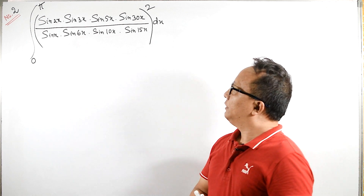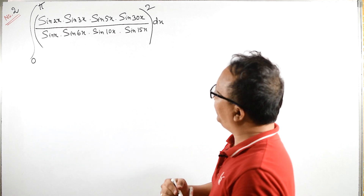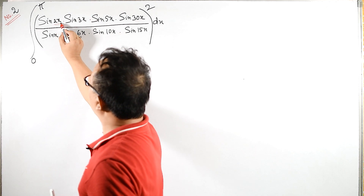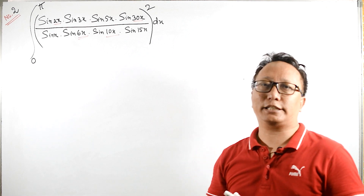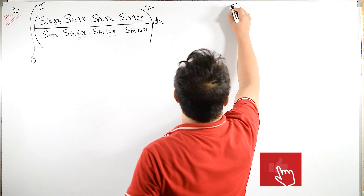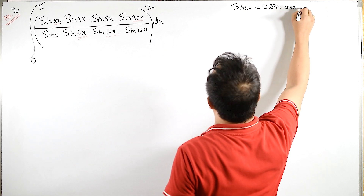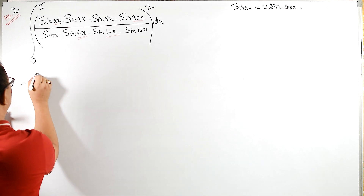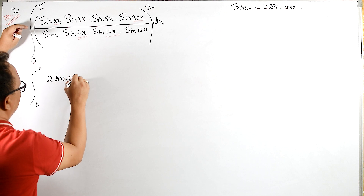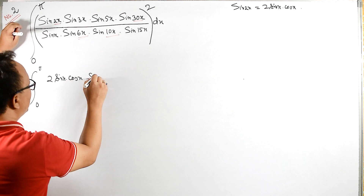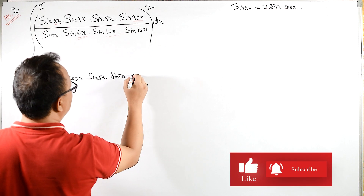Welcome back. This integral seems to be very lengthy as well as more complicated. Over here we have sine 2x, and here also multiples of 2. This multiple of 2 will expand by using sine of 2x: sine of 2x equals 2 sine x cos x. So the integral is from 0 to π, sine 2x is 2 sine x cos x, and sine 3x we cannot reduce it. Sine 5x here we can reduce it.